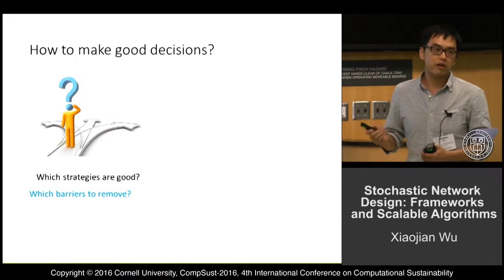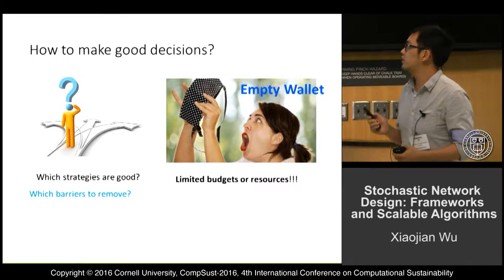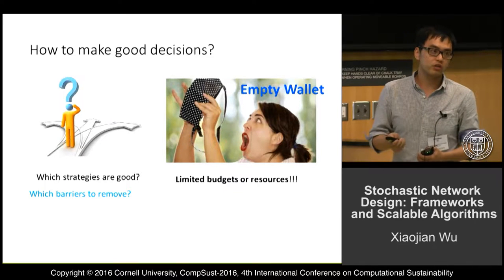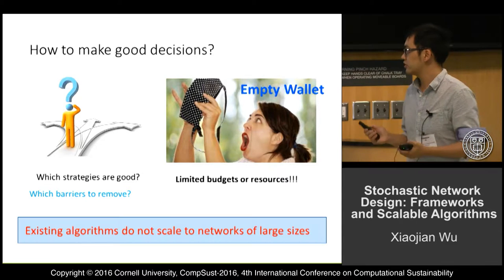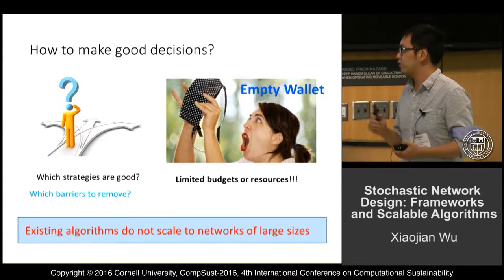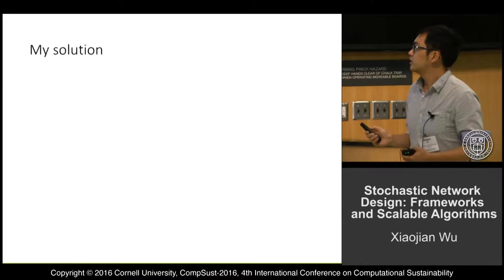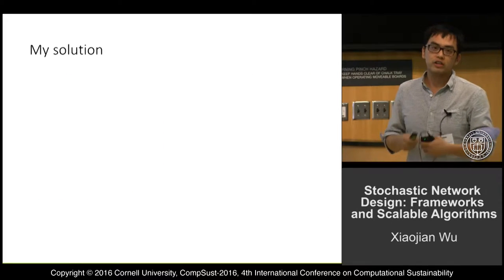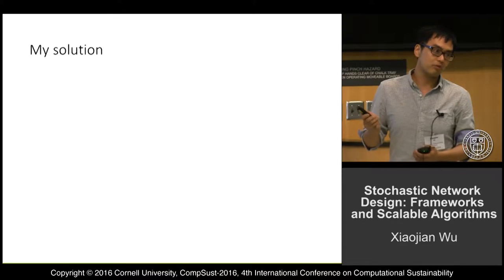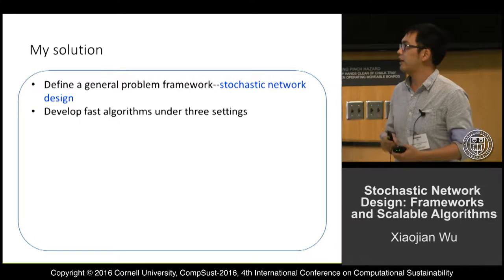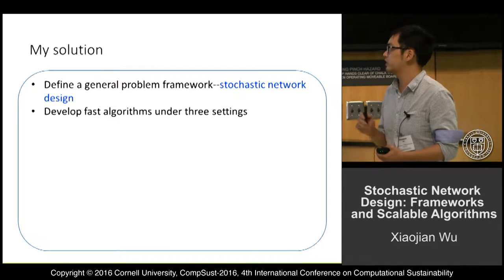Which one is good? For example, which barrier should we remove? When we make the decision, we must consider the limited budget or resources — we want to find cost-efficient strategies. Unfortunately, existing algorithms do not scale up to networks of large sizes. The goal of this work is to provide a scalable algorithm to solve a range of similar problems, so we defined a general problem framework called Stochastic Network Design.